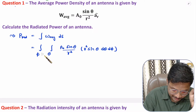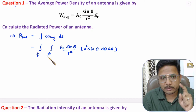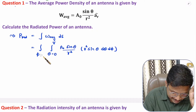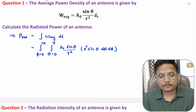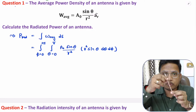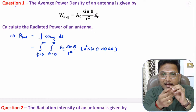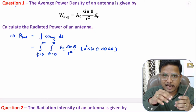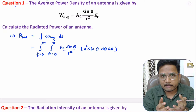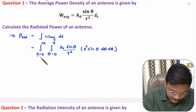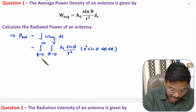The limits of theta and phi are not given here. If they are not given, you need to place the limit of theta as 0 to π and the limit of phi as 0 to 2π. Theta is the vertical angle with respect to the z-axis, so it varies from 0 to π. Phi is the horizontal angle in the x-y plane, varying from 0 to 2π. If limits are not given, you must consider these limits only.